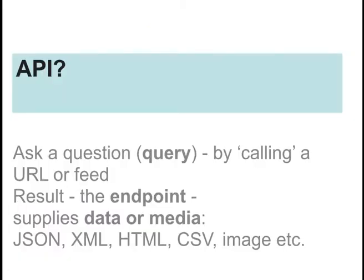It asks a question and it gets something back. The question is called a query and it's very often supplied through some sort of URL — we'll look at some examples of these later. So the question is asked by writing out some sort of URL that formulates that query. As a result, the API gives back something, and that result is called the endpoint — it's basically the web page that you get when you type in the URL. You can actually do this yourself: you can form a query by typing in a URL, and the web page that's given to you is the endpoint — the result of querying that API.